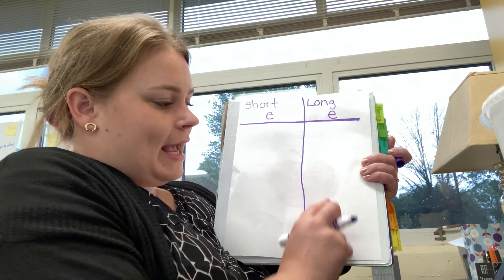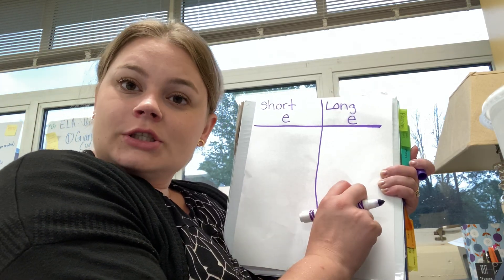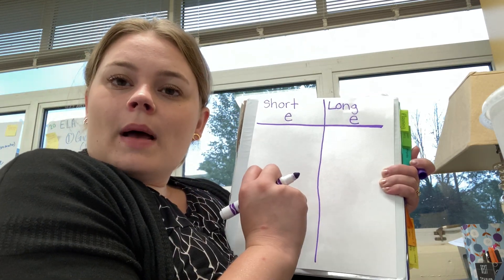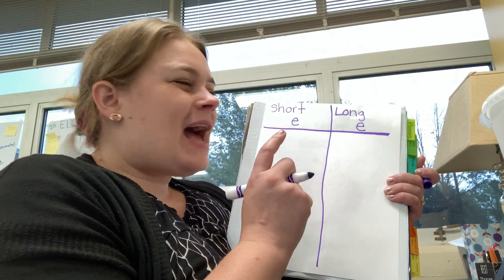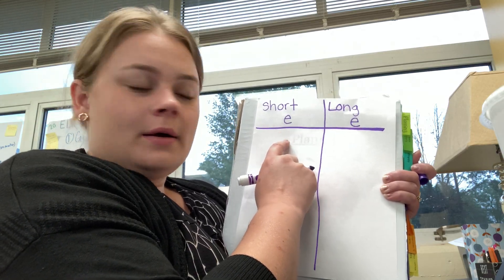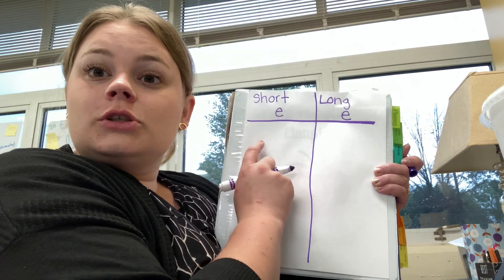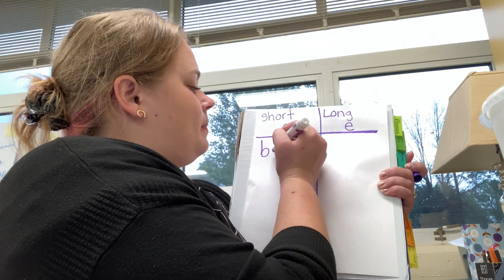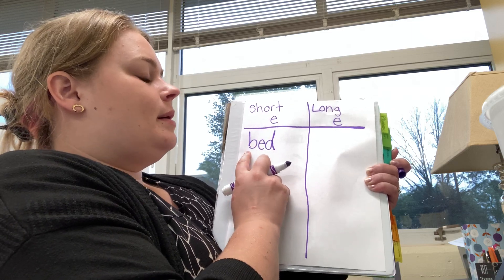Now, on each side, I'm going to write words or draw pictures of what would go in that side. So, I know the word bed has a short E. Eh. B-E-D. So, I can either write bed or I can draw a picture of a bed. Either one is okay. B-E-D bed.